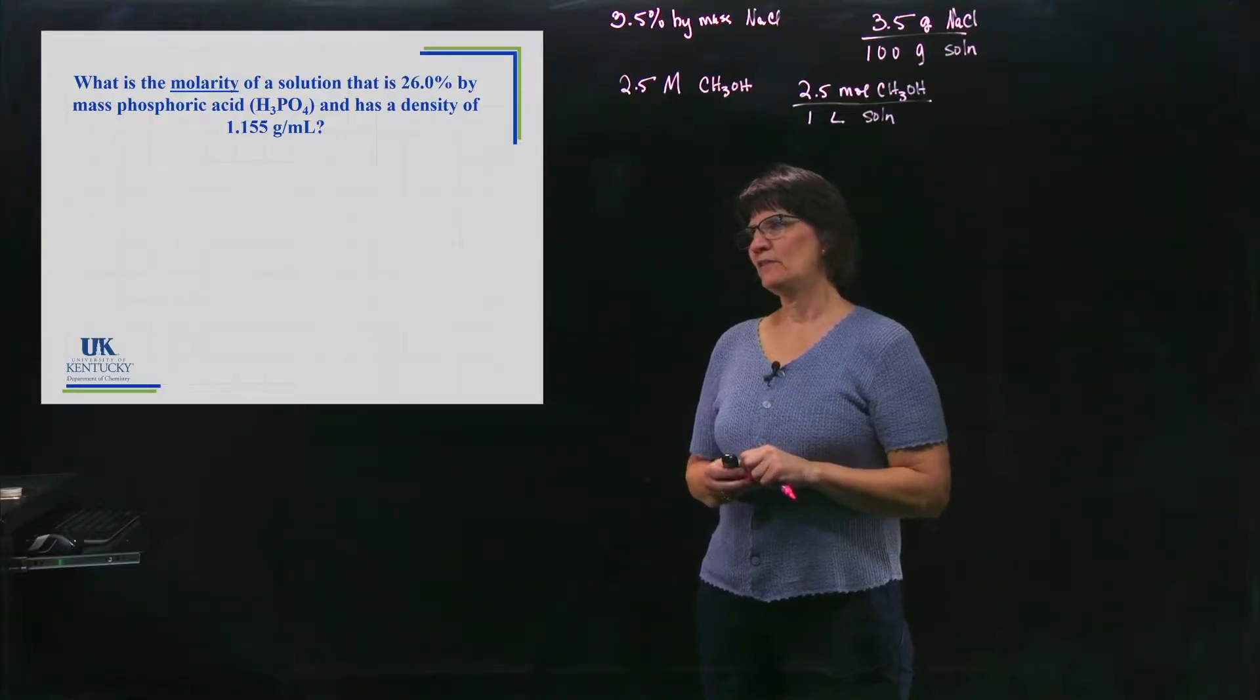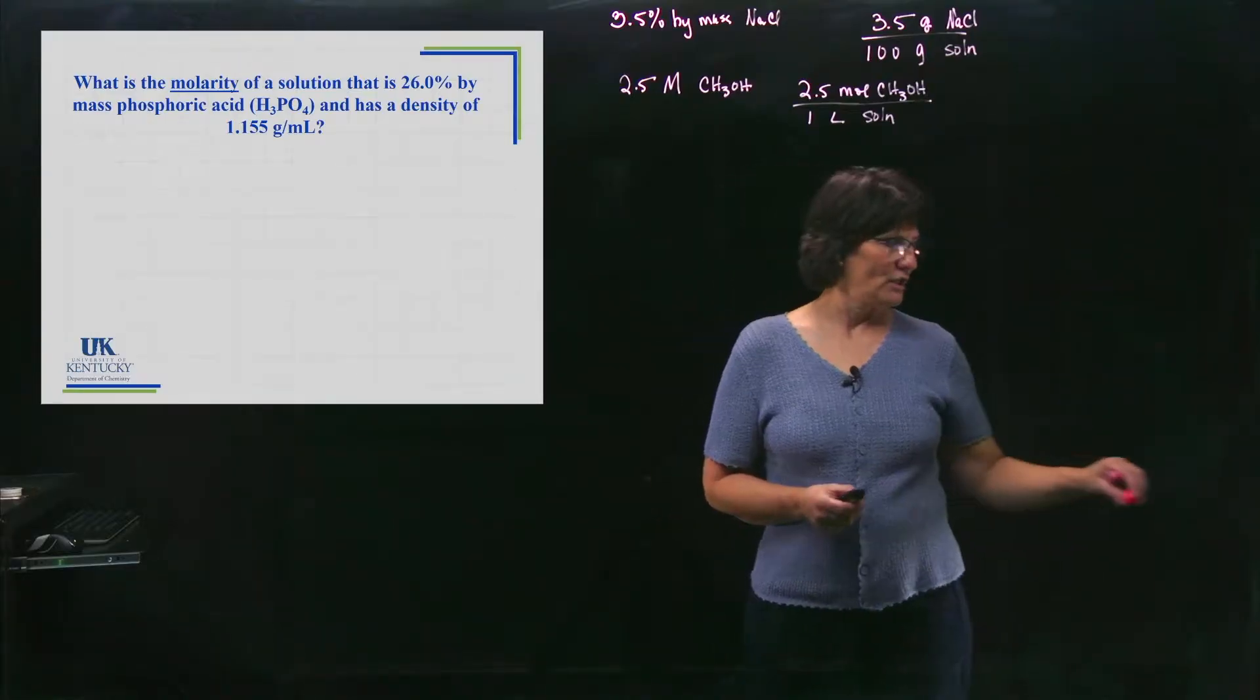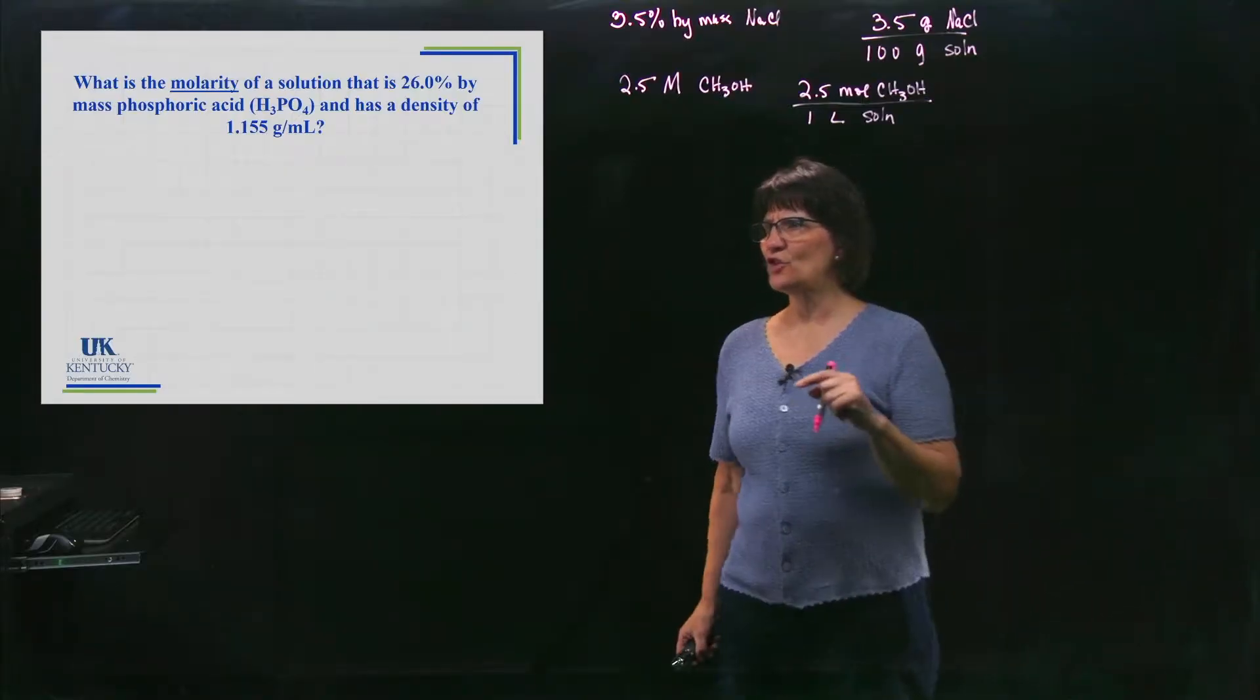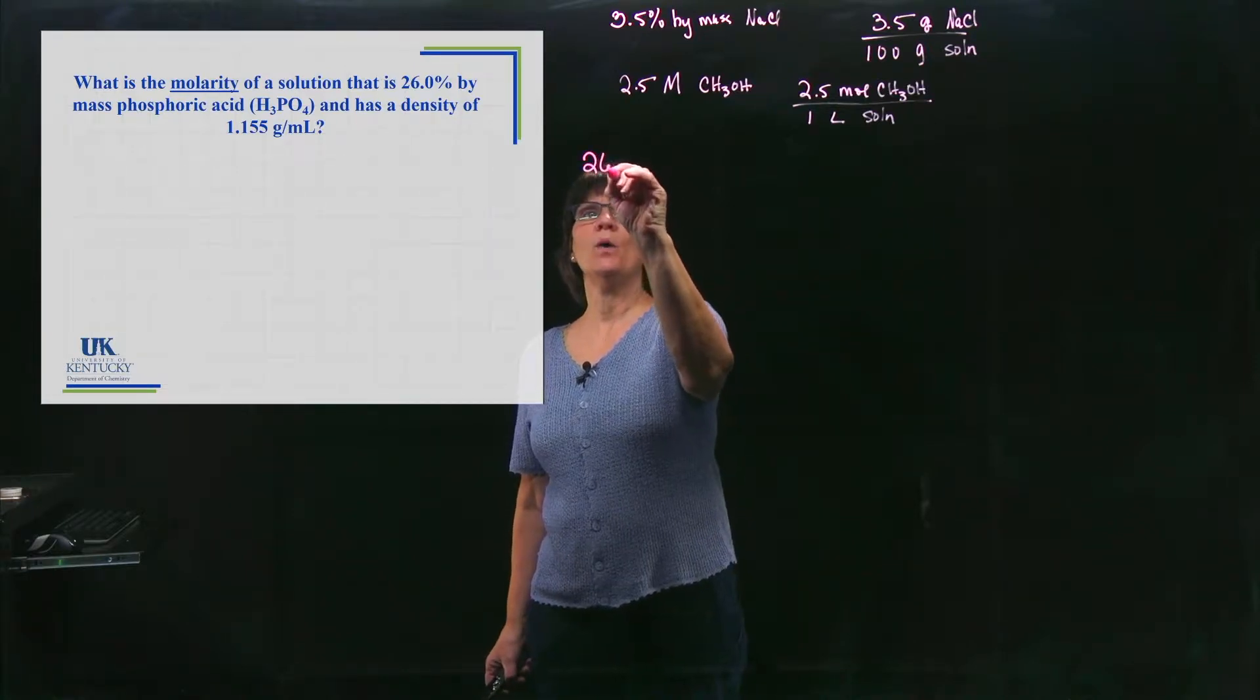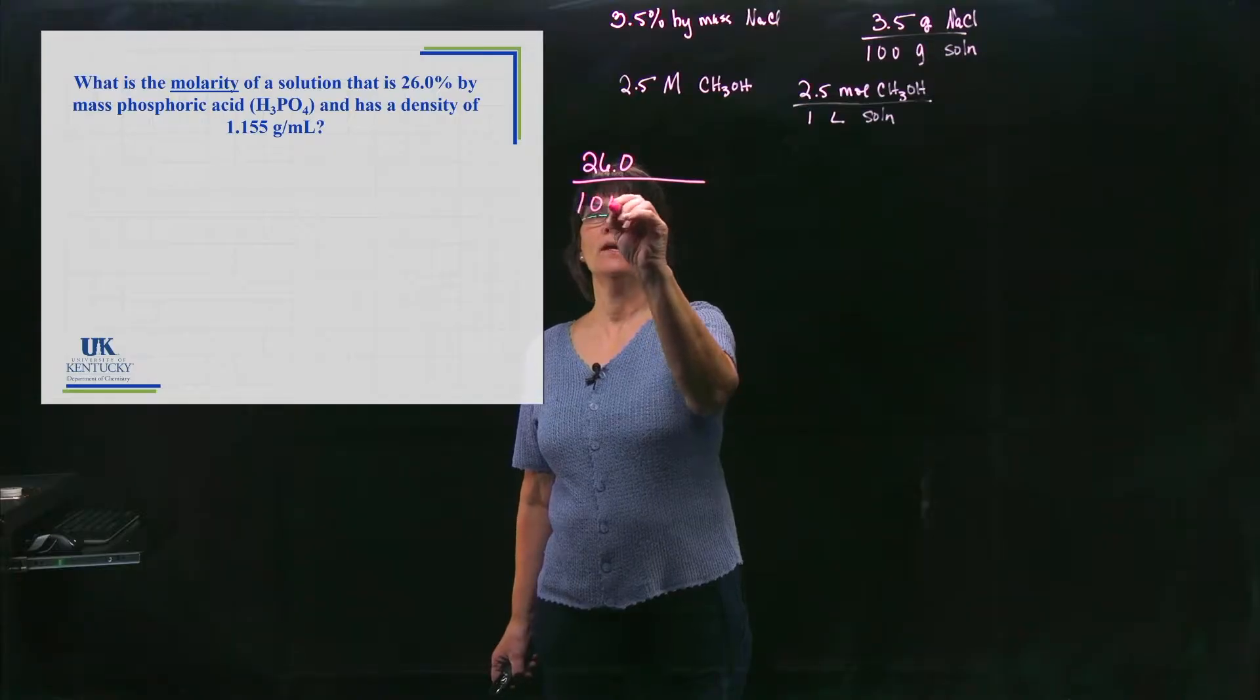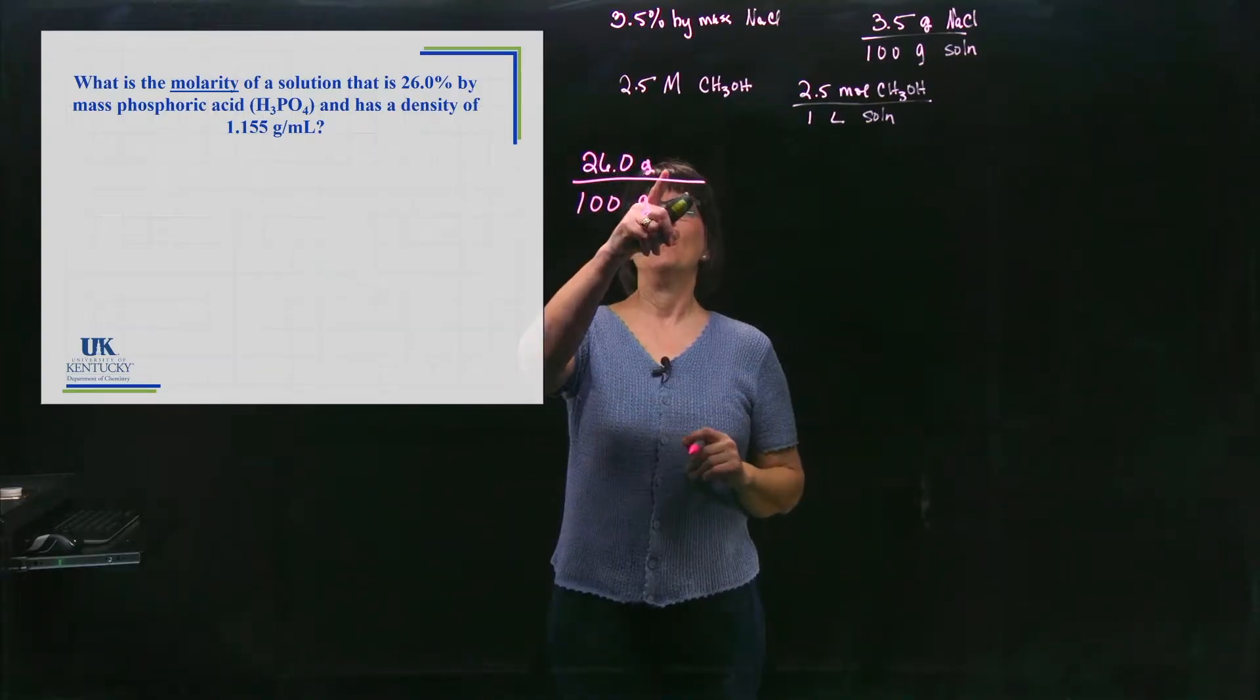In this example, I'm wanting to know the molarity of a solution that's 26% by mass of phosphoric acid. So I'm going to take the concentration unit they gave me and write it as a fraction. 26.0% means per 100. It's percent by mass, so I give it mass units.